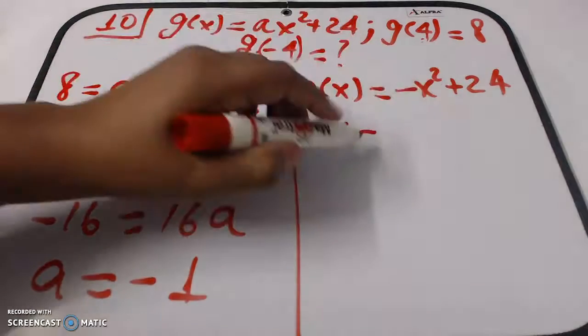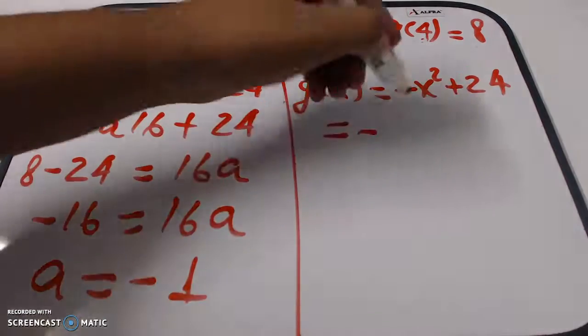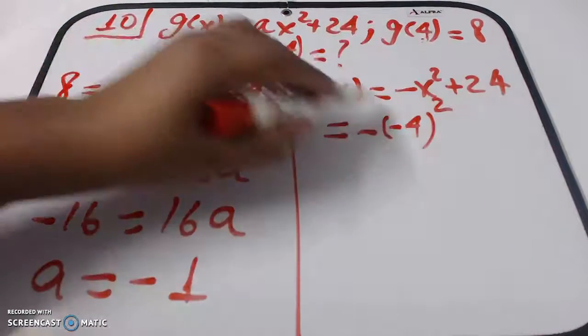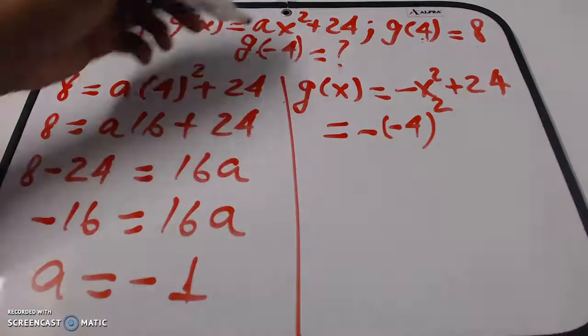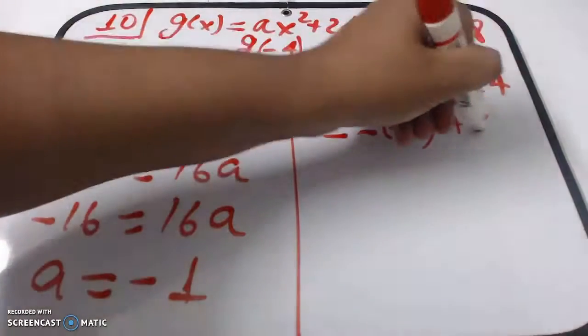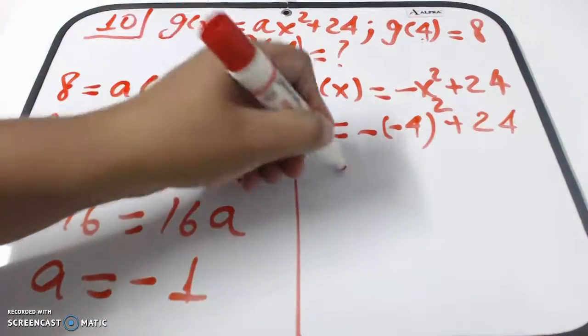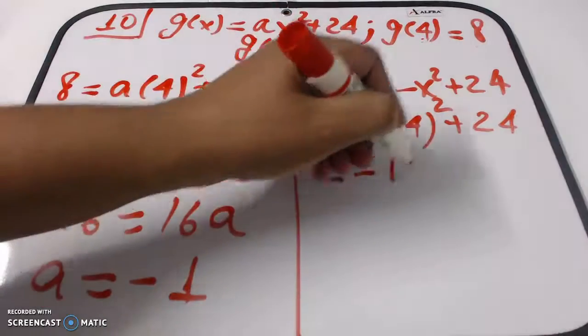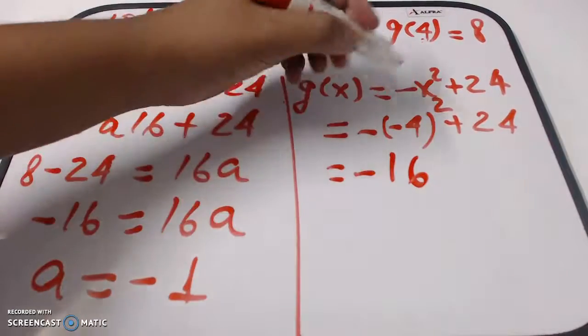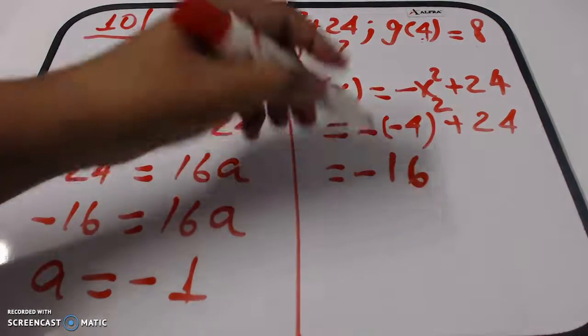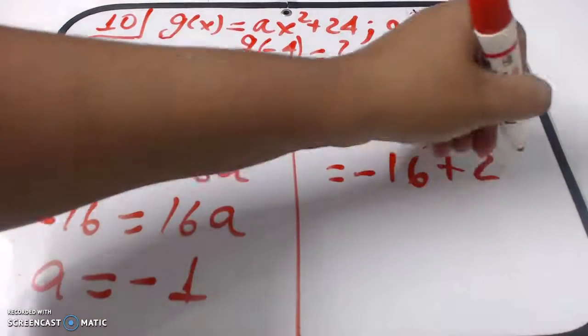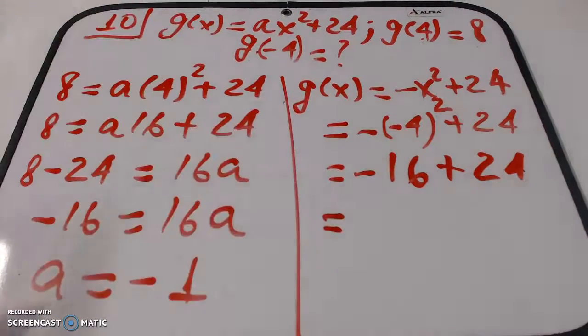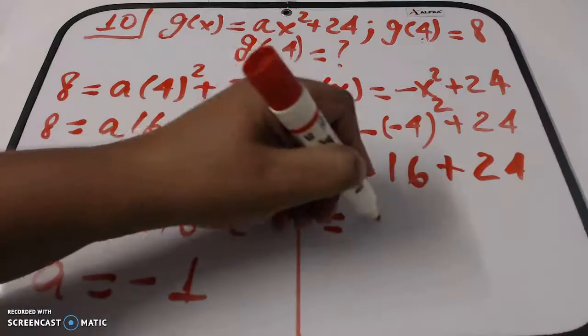The first negative comes from the function. We put parentheses, then (-4)² inside. We get negative times (-4)² equals 16, positive 16. This negative is the one outside the x. We have to be careful with the signs because that makes the difference between a right and wrong answer. So g(-4) = -16 + 24 = 8.